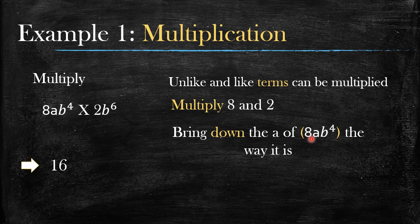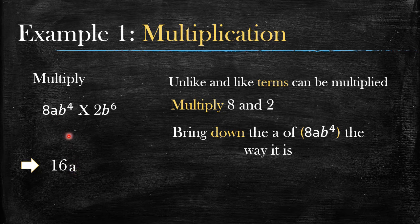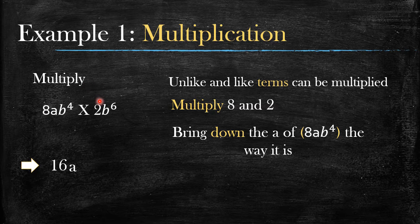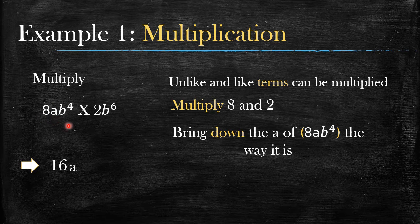Now we bring down the 'a' from 8ab⁴ just the way it is. Why? Because when you look on the other side of the multiplication sign, there is no 'a'. So since there's no matching 'a' on the other side, you just bring it down as-is.